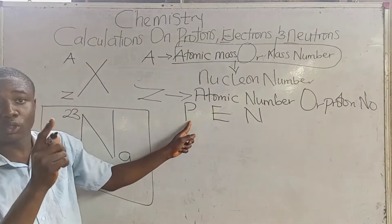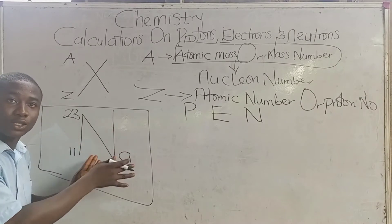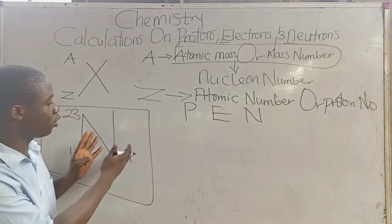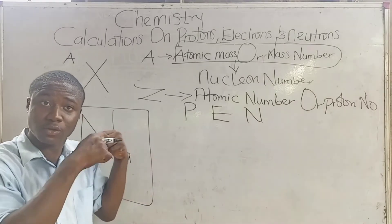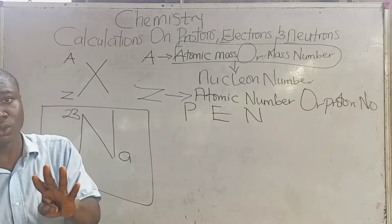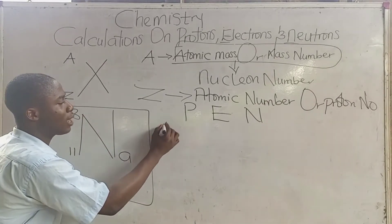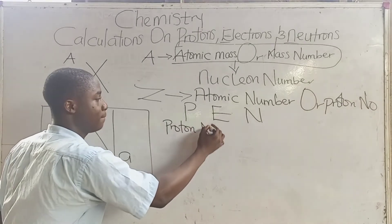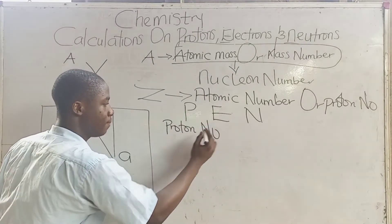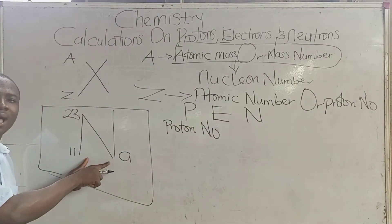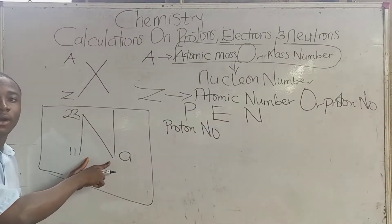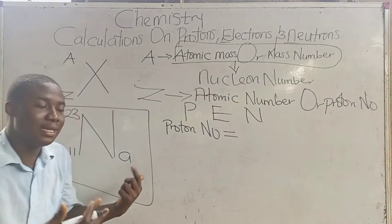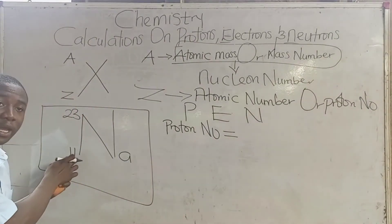How do we calculate the proton number, electron number, and neutron number of this neutral sodium atom? For a neutral atom, the electron number is the same as the proton number. This atom bears no charge, so it is neutral.